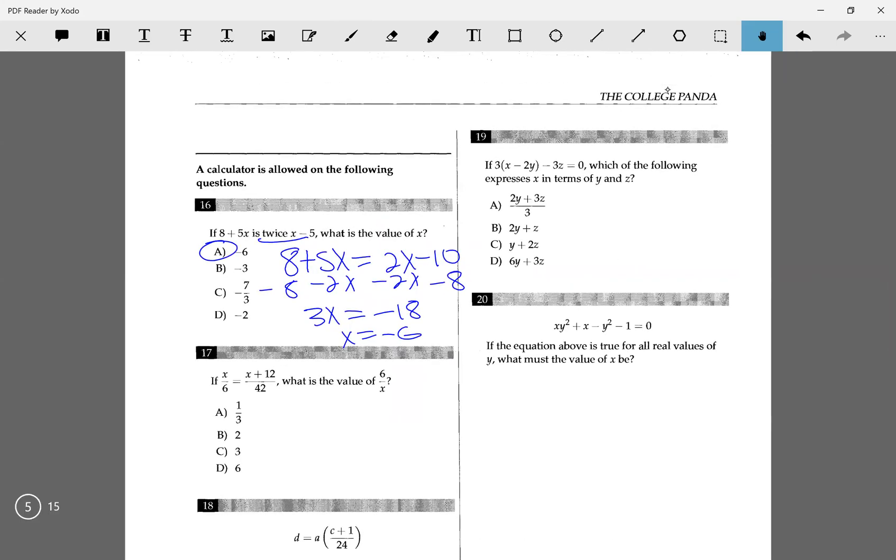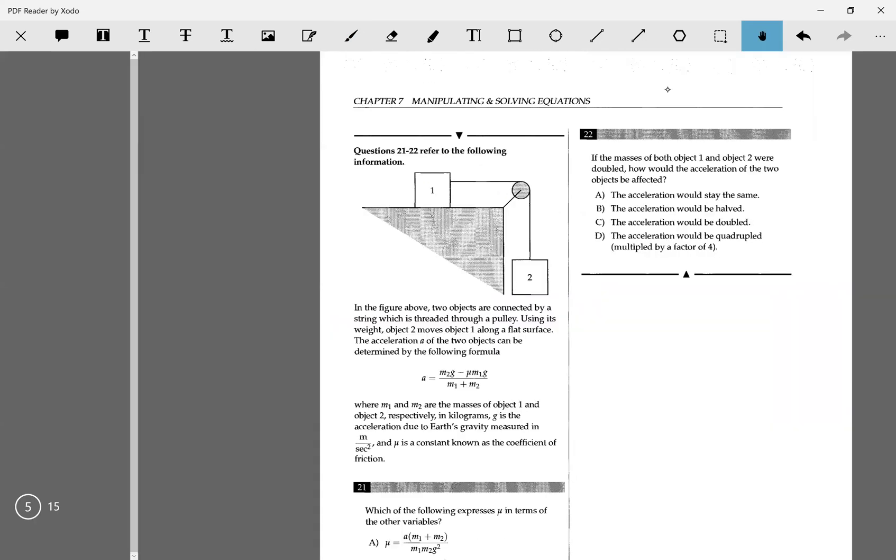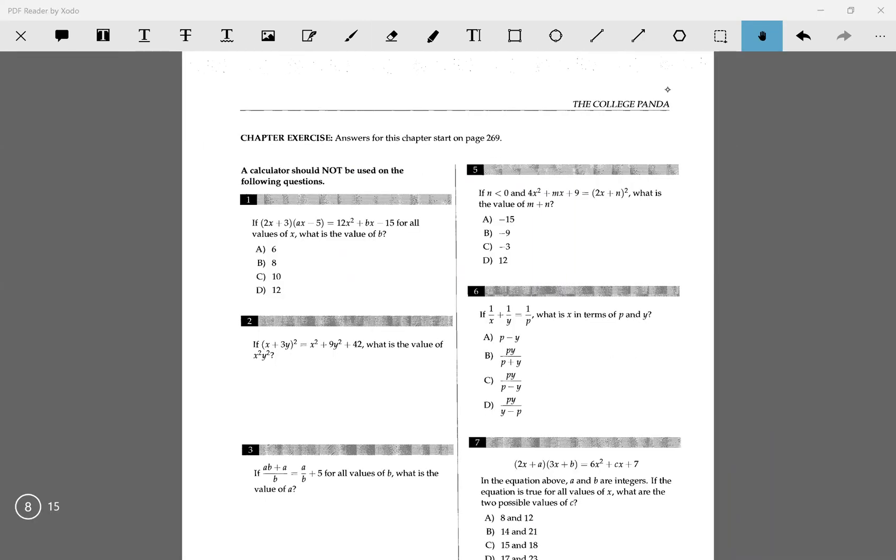The other one I wanted to go to is number 19. If 3 times (x-2y-3z) equals 0, which of the following is x in terms of y and z? Here, they want me to isolate a variable, so they want me to write the equation in terms of y and z. What I want to do is make all the x variables on one side. First I want to distribute this 3 to get 3x minus 6y minus 3z equals 0. Now I want to move the y and z over to the other side: 3x equals 6y plus 3z. Now I'm dividing both sides by 3. x equals 2y plus z. That gives me answer choice B.